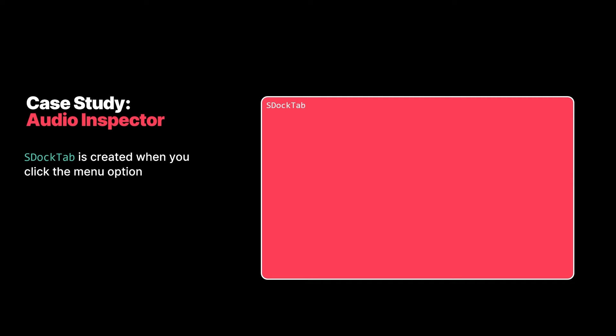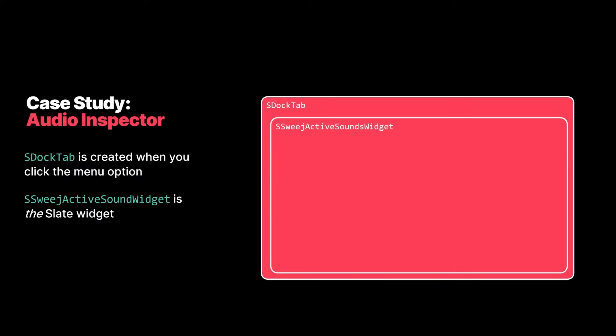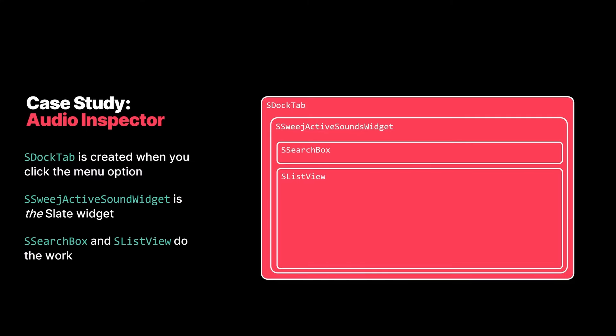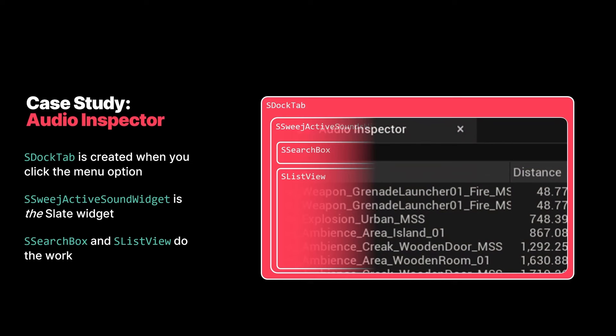When you open the Audio Inspector through the menu, the module creates an SDocTab which allows you to dock it anywhere in the editor layout — great because everyone has their own preferences for where things should be. Inside that SDocTab is an instance of SSwaygeActiveSoundsWidget, where all the magic happens. The main widgets that do all the work are SSearchBox and SListView. You can see the search box at the top and the list view shows all of the information.